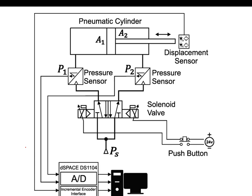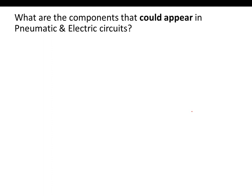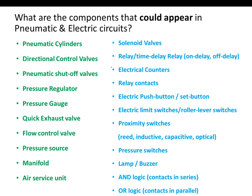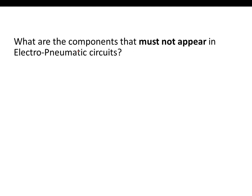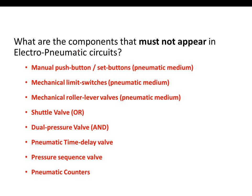What are the components that could appear in an electro-pneumatic system? There are plenty of them. The ones in green are the pneumatic components which we are still using — although we are in an electro-pneumatic system, we still have pneumatic components. On the right side in blue color are the electric components. However, there are components that must not appear in our electro-pneumatic circuit, and they are shown in red color.